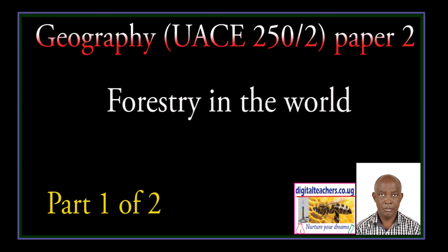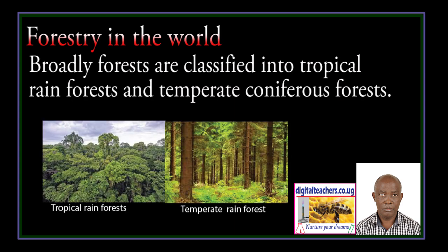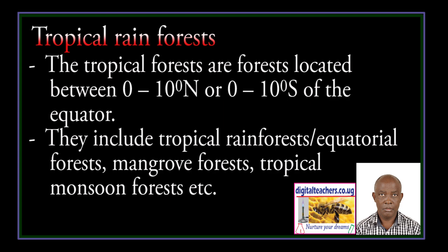The topic is Forestry in the World. A forest is an area of land dominated by trees. Broadly, forests are classified into Tropical Rain Forests and Temperate Coniferous Forests. Tropical Rain Forests are forests located between 0 to 10 degrees north or 0 to 10 degrees south of the equator. They include Tropical Rain Forests, Oro Equatorial Forests, Mangrove Forests, and Tropical Monsoon Forests.